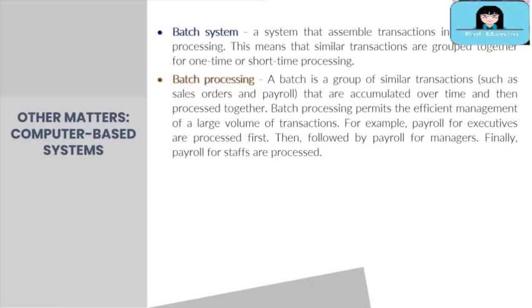Next we have batch processing, where a group of similar transactions is accumulated or gathered over time and then processed together. For example, the timekeeper waits for the completion and submission of all time sheets on a certain date; once all time sheets are submitted, the timekeeper starts reviewing, approving, and posting the batch of time sheets into the computer system for payroll processing. Batch processing and batch system are related terminologies.